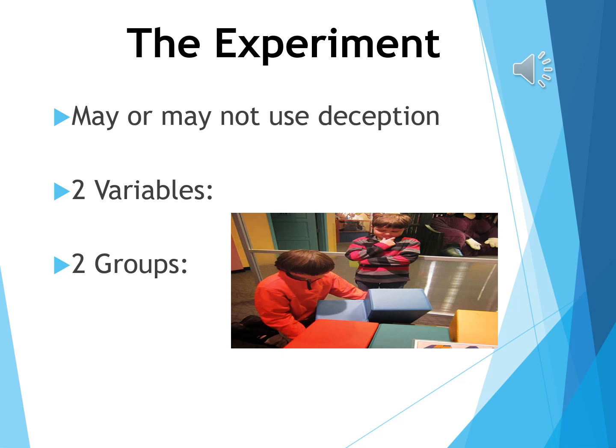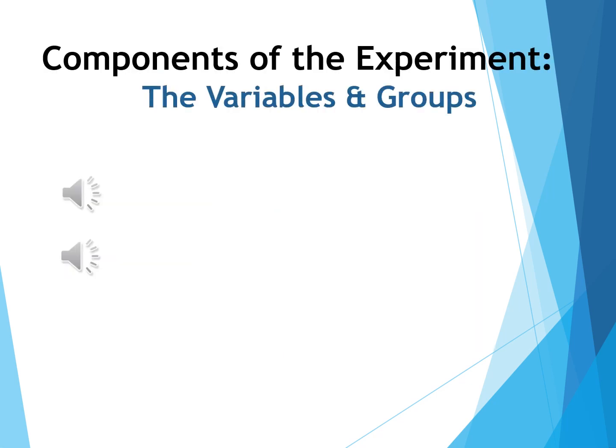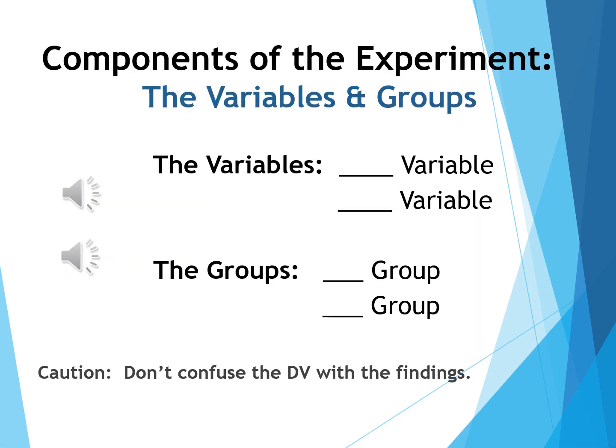Let's now consider the experiment. The experiment may or may not use deception — many students in intro psych are surprised that psychologists can still use deception in experiments. Consider the placebo pill: isn't that deception? Experiments will have two variables and two groups. Let's look at the basic components of the experiment — those elements which eventually allow the cause and effect conclusion to occur: two types of variables, two types of groups. Take a moment and see if you can identify both.